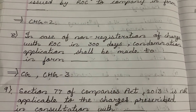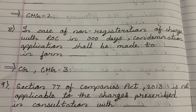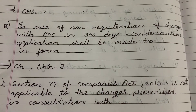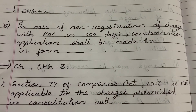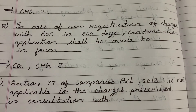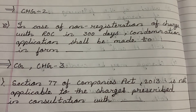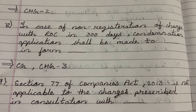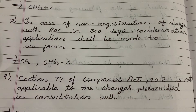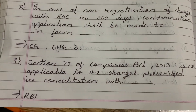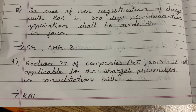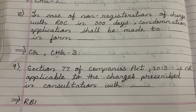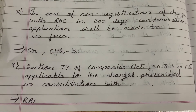In case of Non-Registration of Charge with ROC within 30 days, a condonation application shall be made to the Central Government (CG) in Form CHG-3.